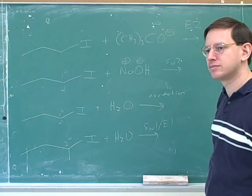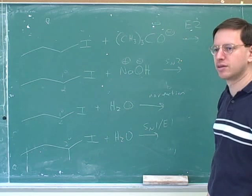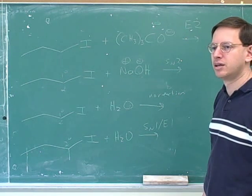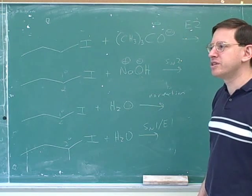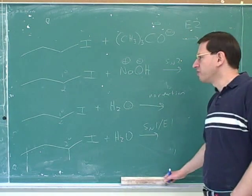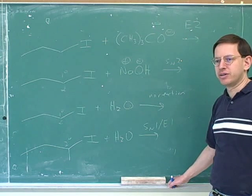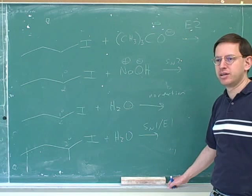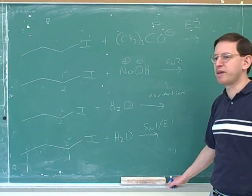Even with a tert-butyl oxide, if you have a methyl carbon, then it's going to do SN2. That's the only time that it will go SN2. Yeah. And the reason is, there's a reason for that, though. Remember, what does an elimination reaction do? It makes a pi bond between the alpha and the beta carbon. Correct.